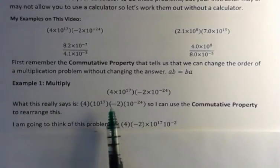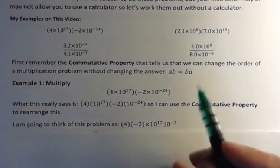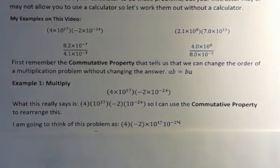I'm going to put my integers together, 4 and negative 2, and my powers of 10 together, 10 to the 17th and 10 to the negative 24th.